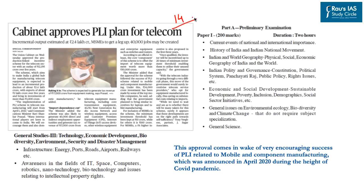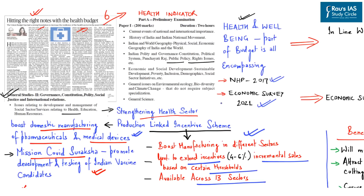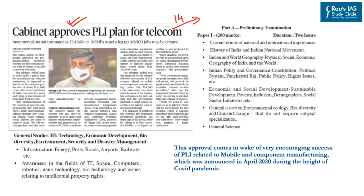The next news, appearing on page number 14, says 'Cabinet approves PLI plan for telecom.' The Production-Linked Incentive plan has been approved for the telecom sector. This comes following the encouraging success of PLI related to mobile and component manufacturing announced in April 2020 during the height of the COVID pandemic.